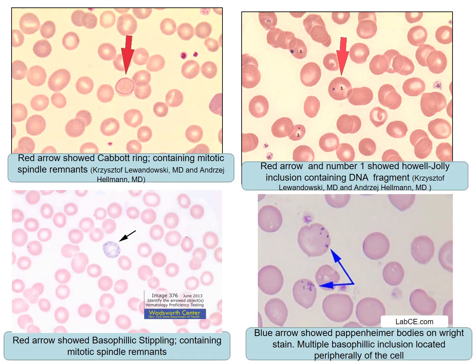In the first picture, the red arrow shows the Cabot ring, containing mitotic spindle remnants. In the second picture, the red arrow at number one shows a Howell-Jolly inclusion containing DNA fragments. In the third picture, the red arrow shows basophilic stippling containing ribosomal remnants. In the last picture, the blue arrow shows Pappenheimer bodies on routine stain — multiple basophilic inclusions located peripherally on the cell.